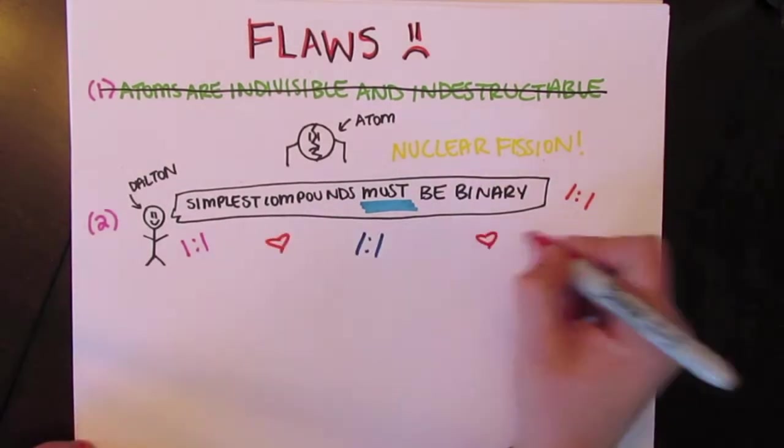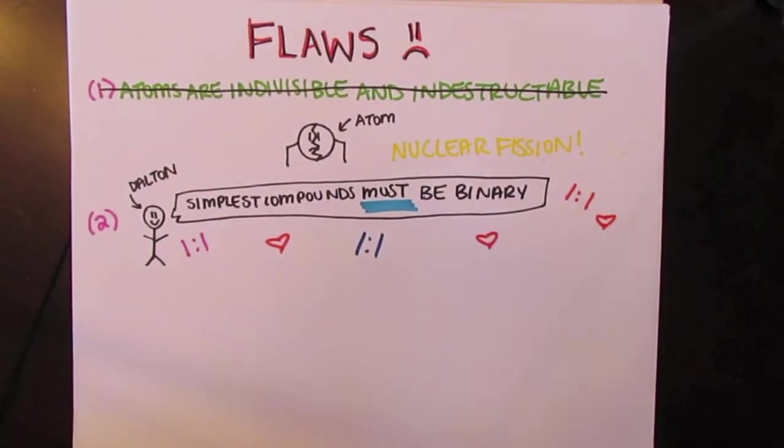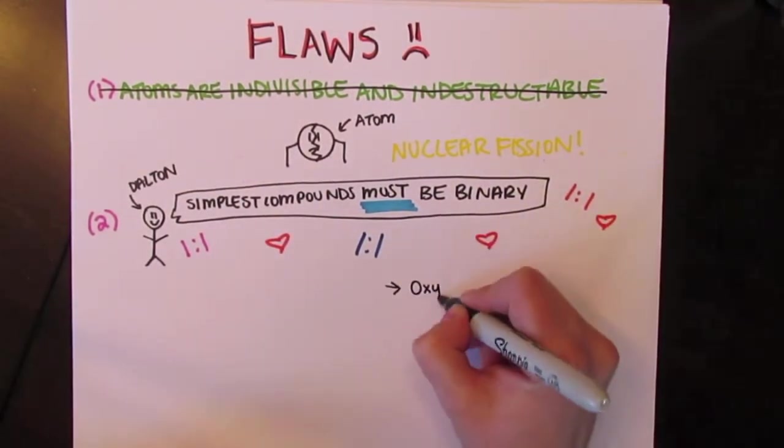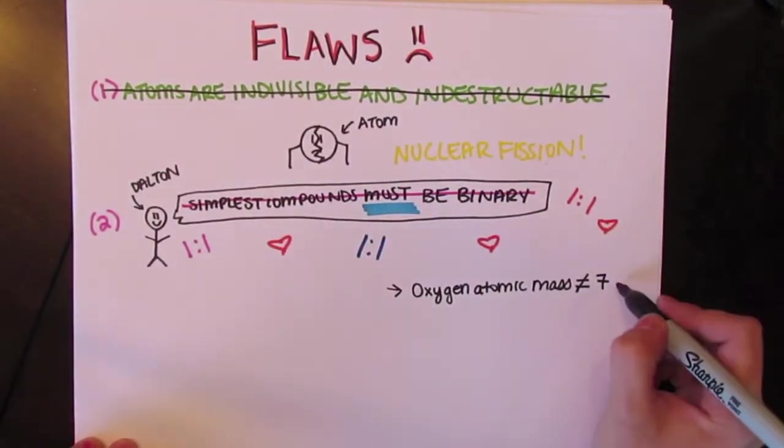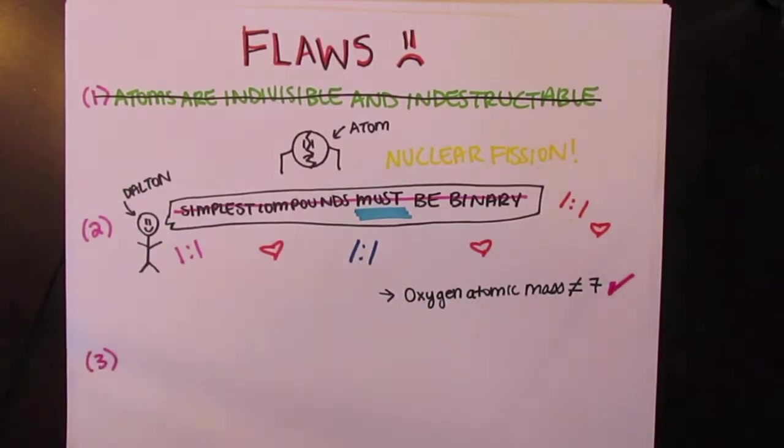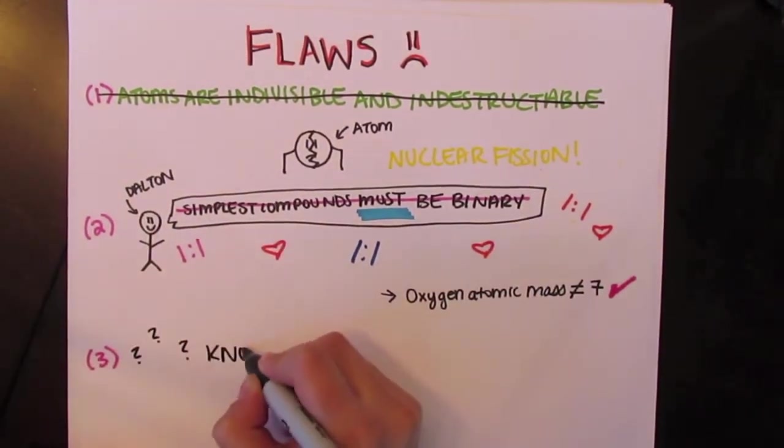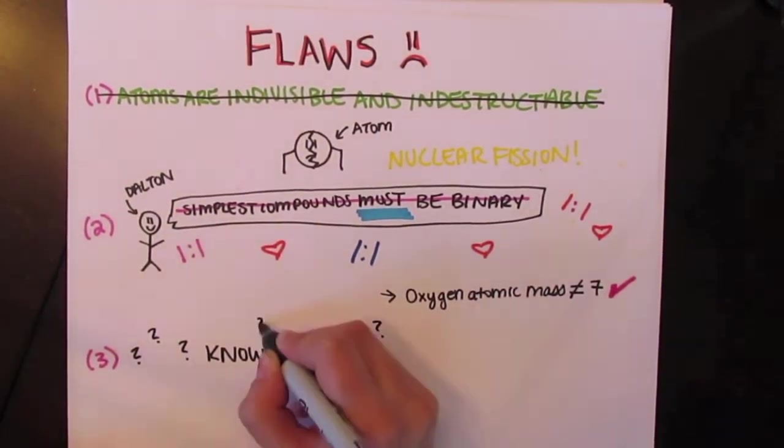This, for example, led him to the inaccurate assumption that oxygen had an atomic mass of seven and not eight. Dalton possessed no knowledge of electrons, nuclei, or the possibility of isotopes, and obtained very little experimental evidence to prove his theories.